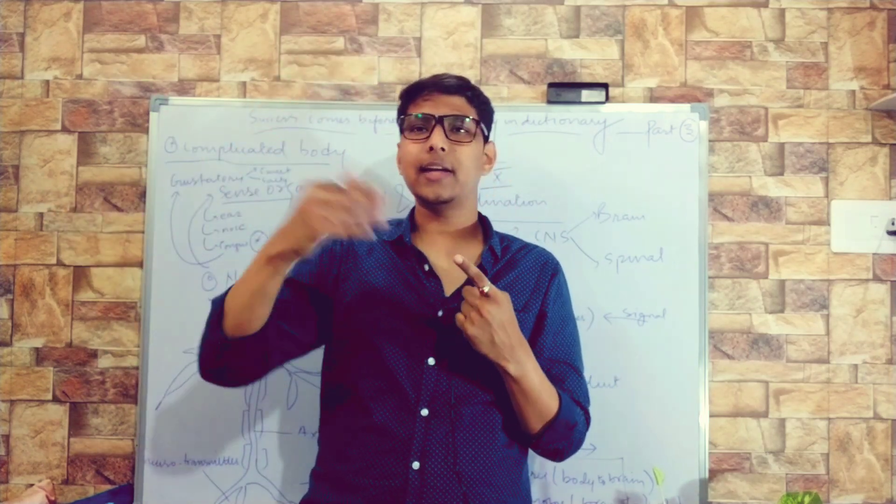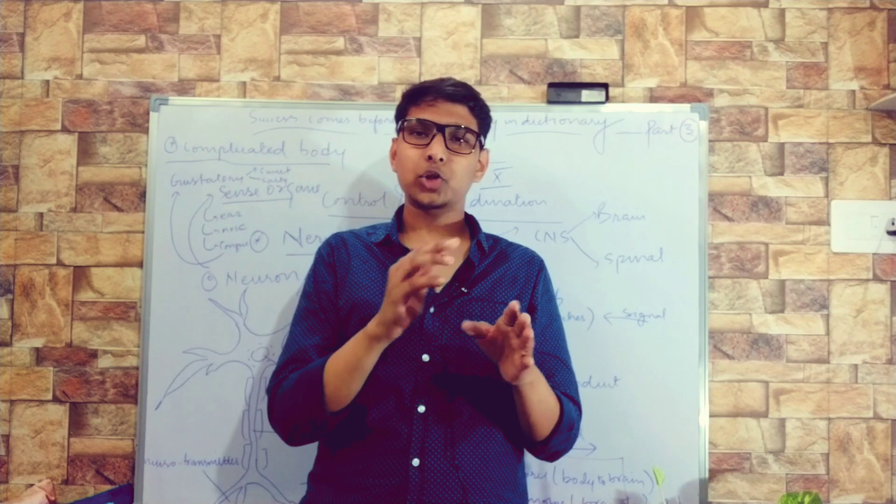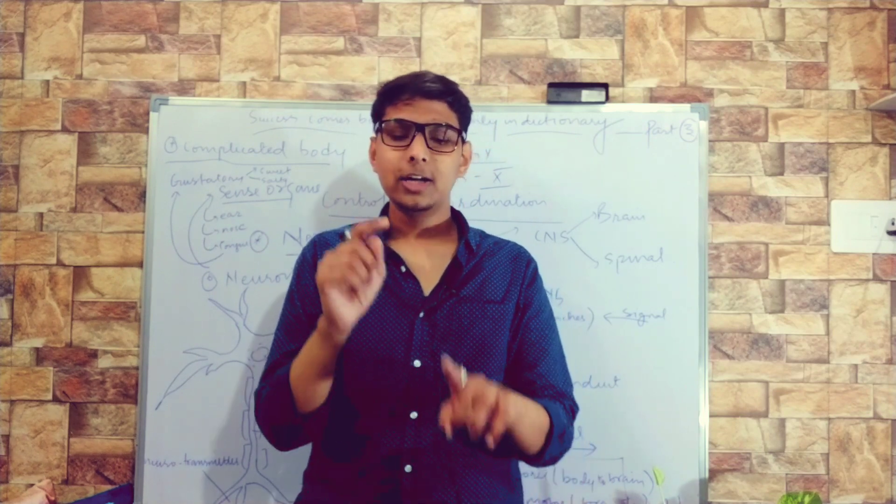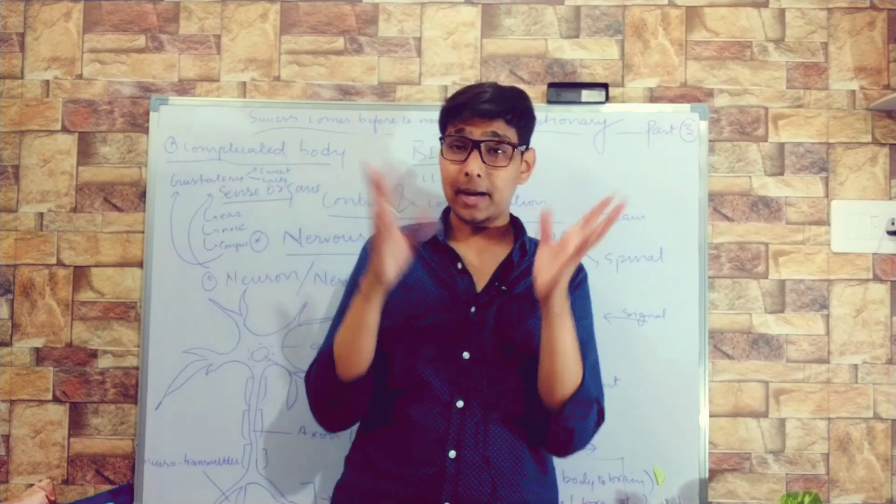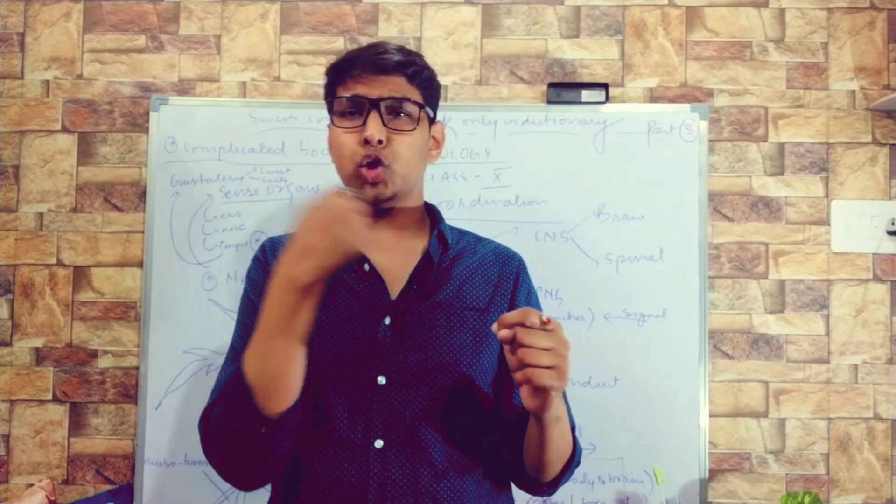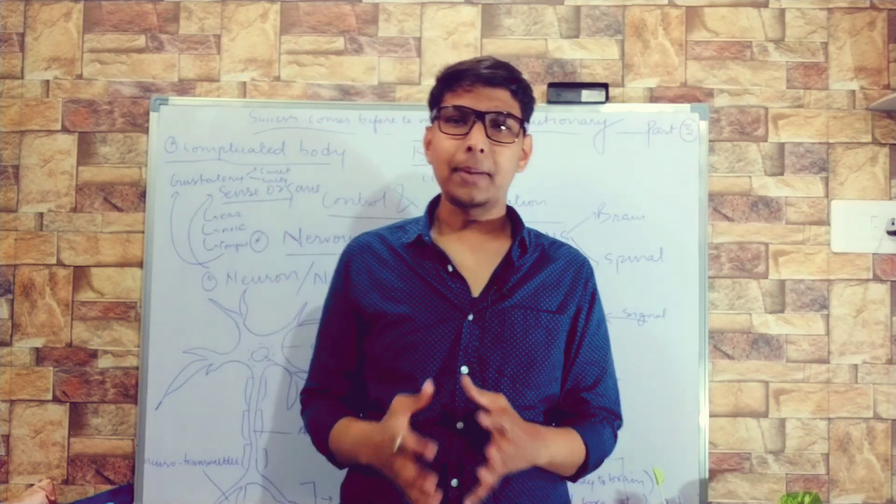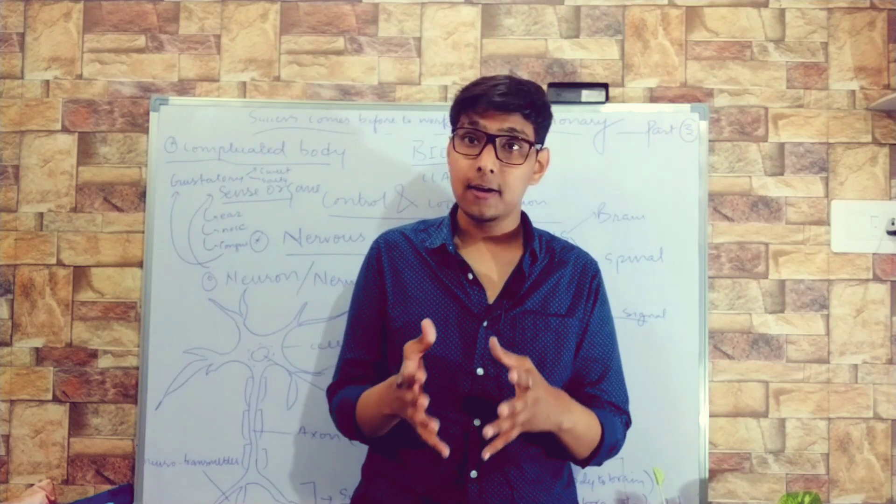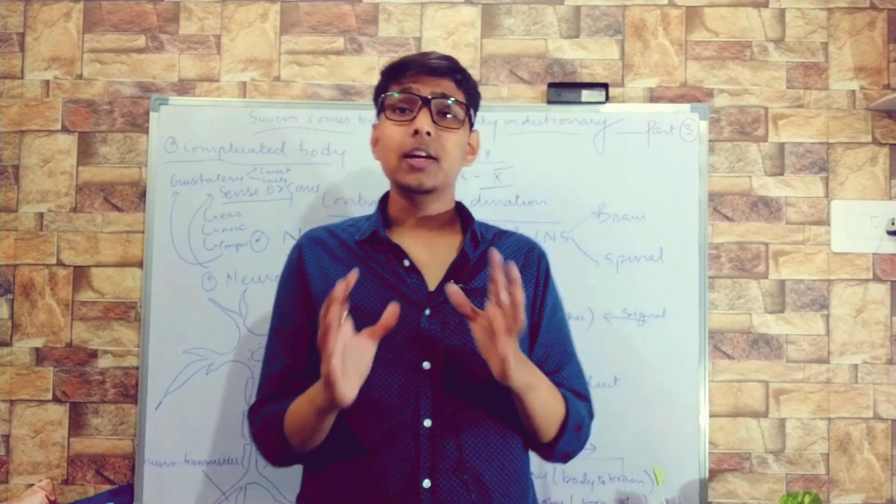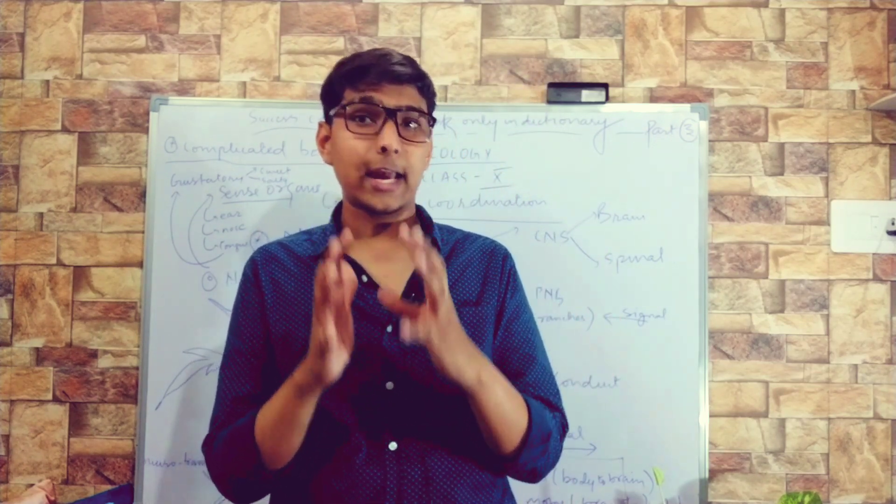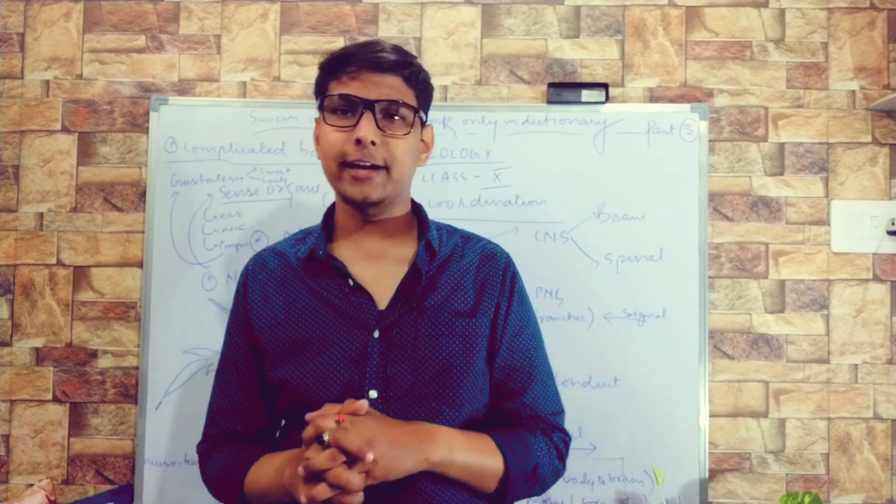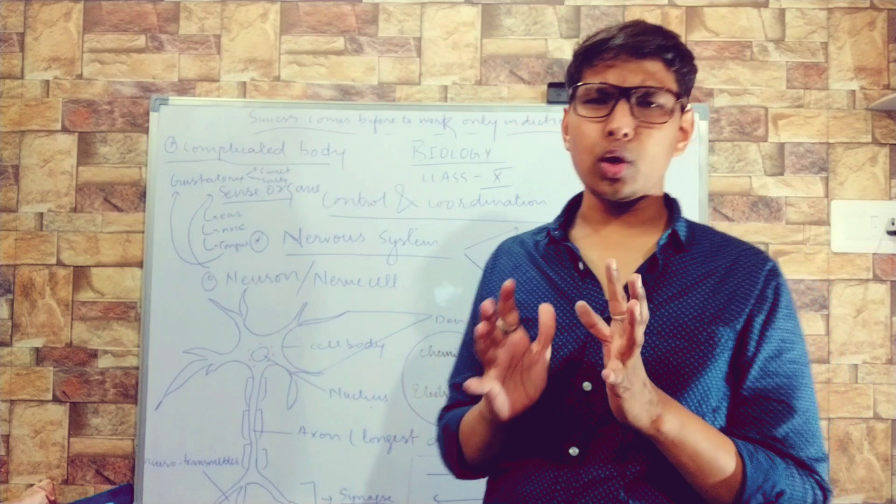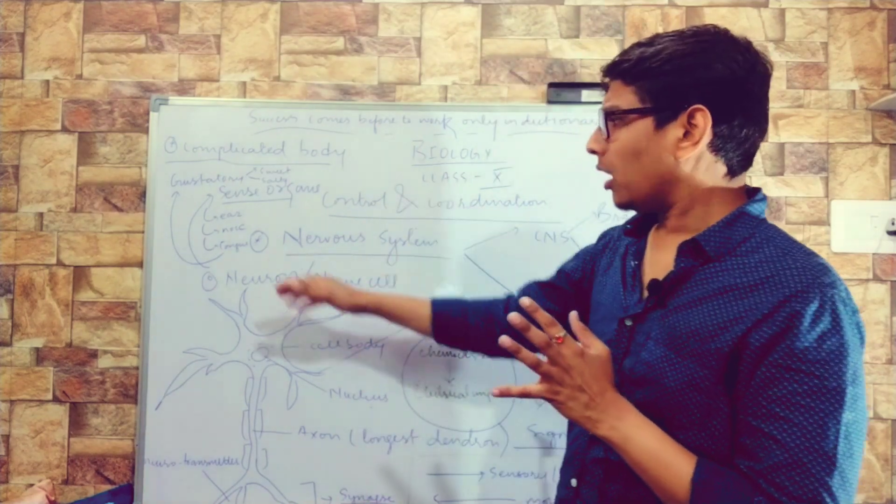A shortcut is formed at the spinal cord. Spinal cord gives response first. Then information is sent to brain that this happened and I reacted like this. But for instant reaction, the shortcut which is formed from sensory to spinal, spinal gives response back. Later brain receives information. Short cut, short path. This is called reflex arc and the response we have given is called reflex action. The sudden response to stimulus is called reflex action.